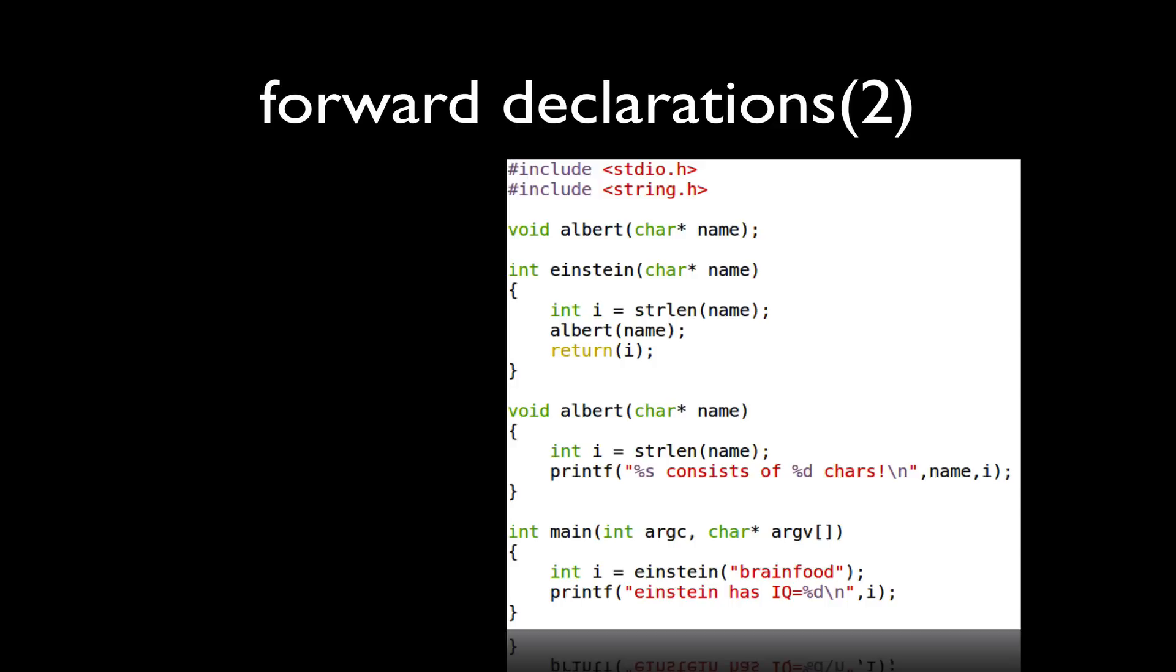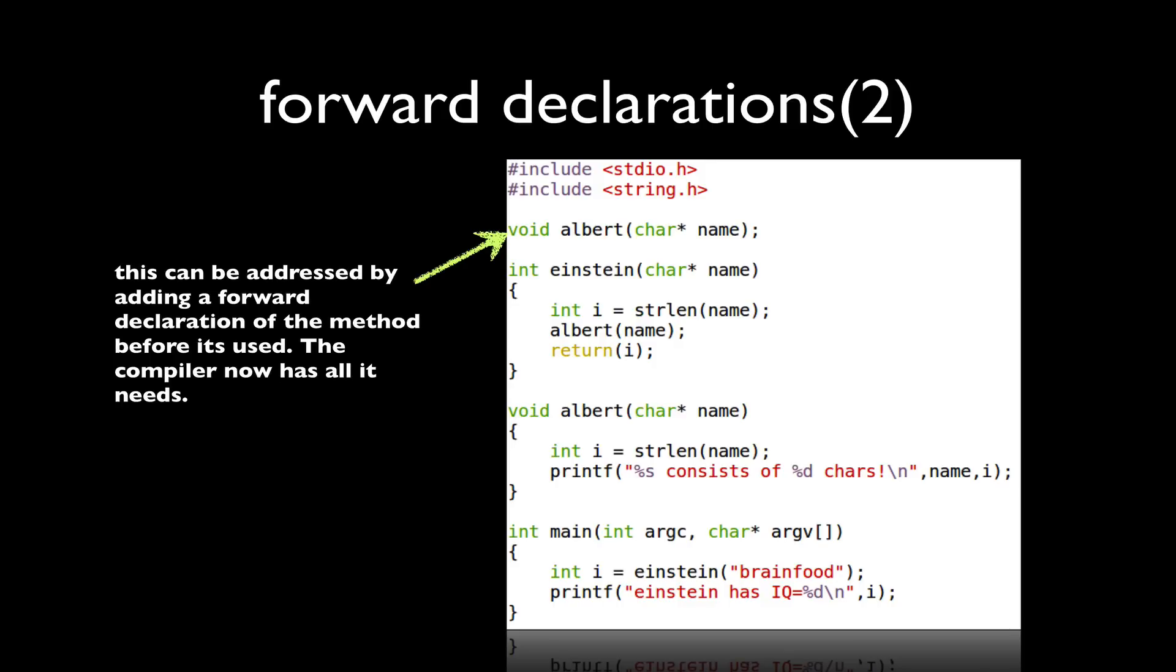We can correct this problem by simply adding a forward declaration before we reference the function in Einstein. This consists of simply the function's prototype followed by a semicolon. So we're actually leaving off the block of code and we'll define that later in the function.